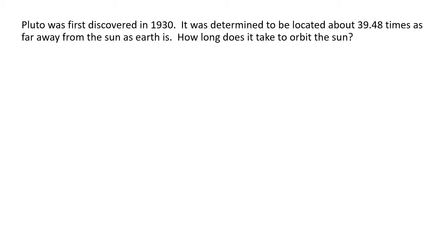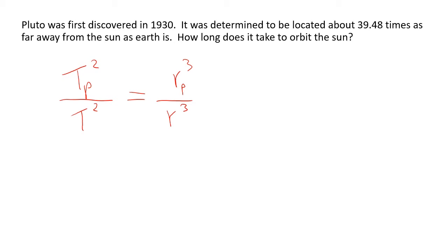Kepler's third law tells us that Pluto's orbital period squared divided by another planet's orbital period squared equals Pluto's average distance from the Sun cubed divided by that other object's average distance cubed. We could use any object orbiting the Sun — another planet, a comet, an asteroid, or an artificial satellite — as long as we know its orbital period and average distance. However, if we choose carefully we can make life a lot easier for ourselves.